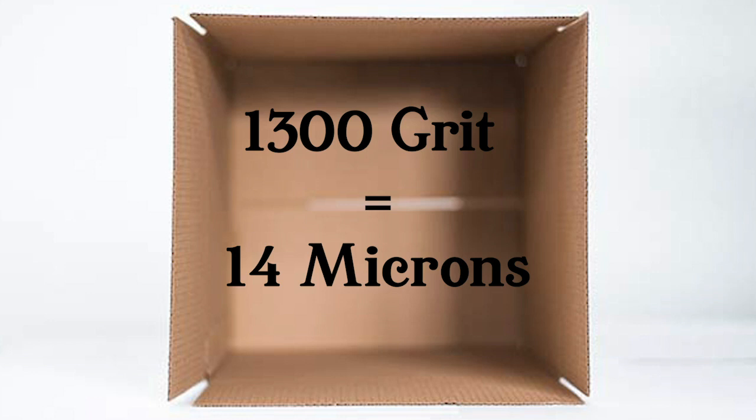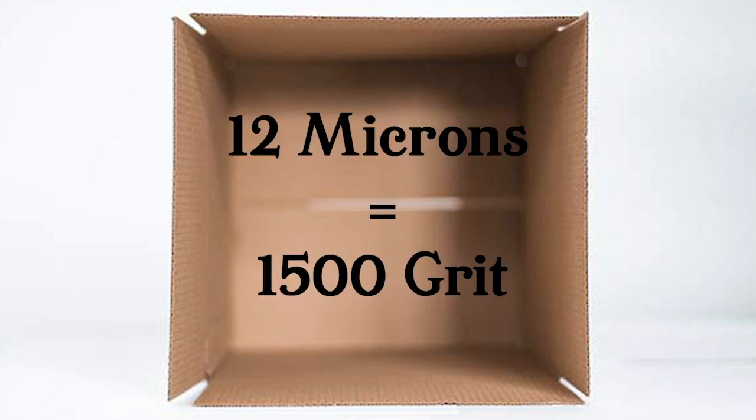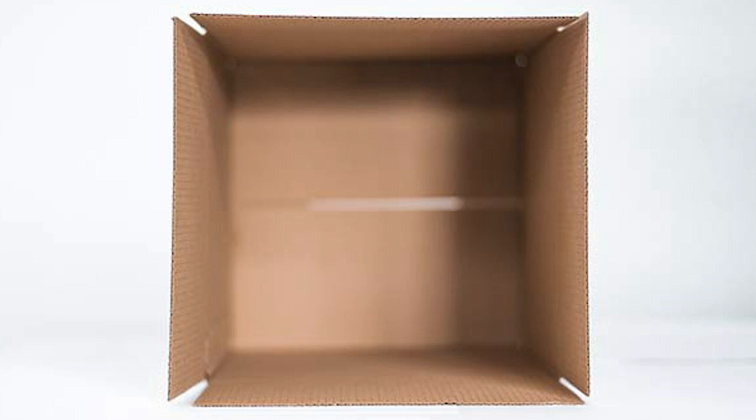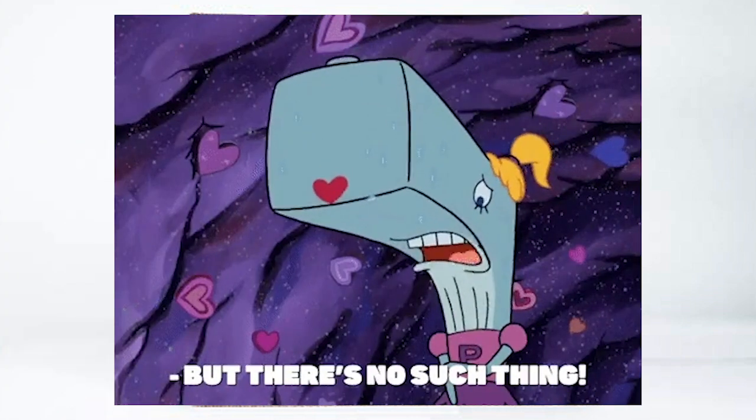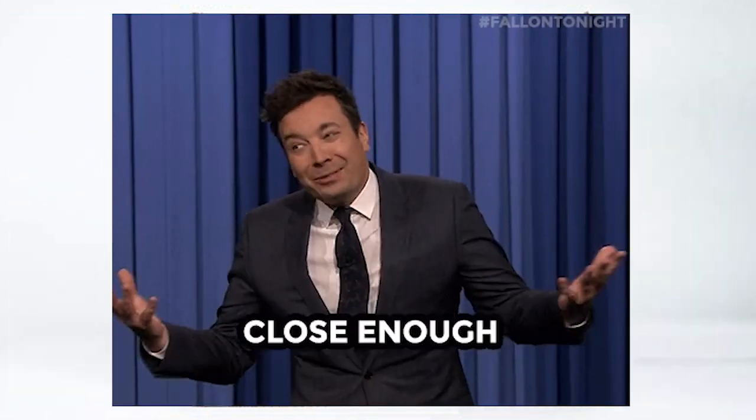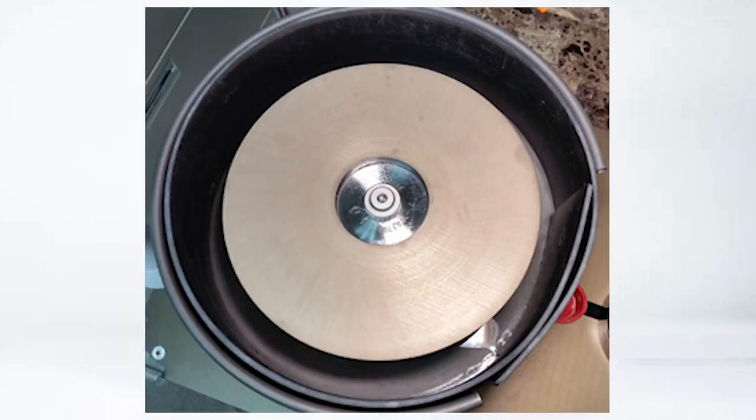So my 1200 microns is a 1500 grit lap. Now there is no such thing as a 1500 grit lap, but it's close enough to a 1200 grit lap. Grit and micron both refer to the size of particles embedded in an abrasive material, in our case diamond particles.